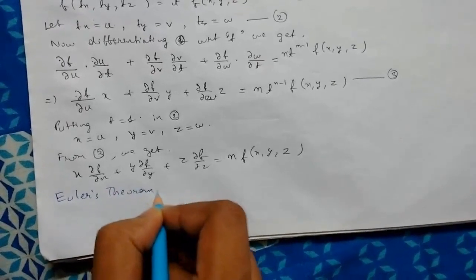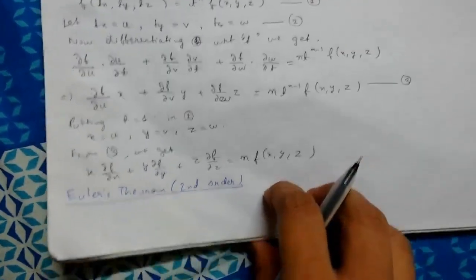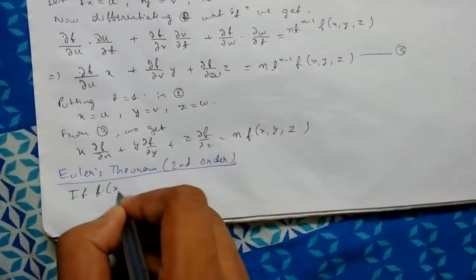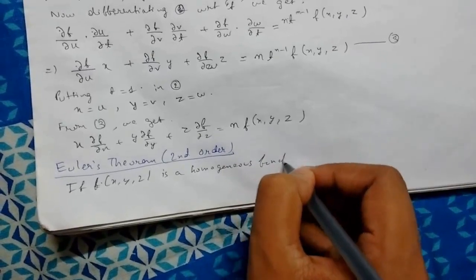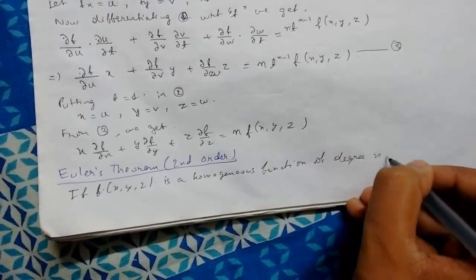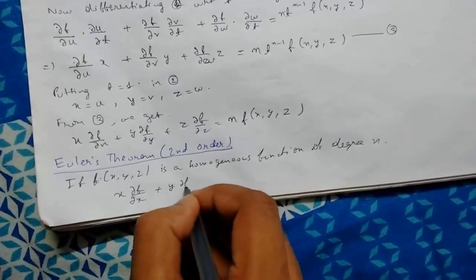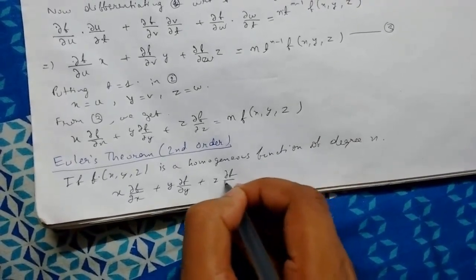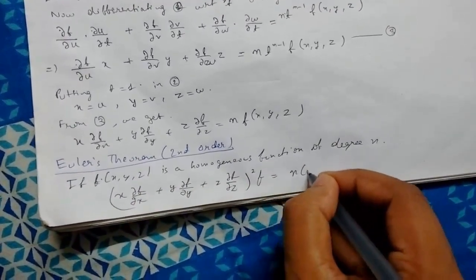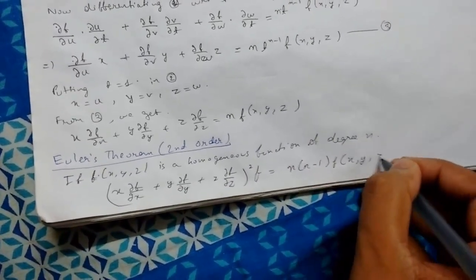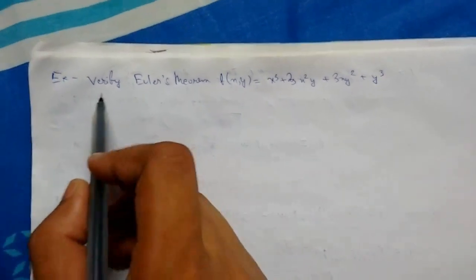Now let me write Euler's theorem for second order. If f of x, y, and z is a homogeneous function of degree n, then x del f del x plus y del f del y plus z del f del z, whole squared, equals n into n minus 1 times f of x, y, z. So this is Euler's theorem for second order.